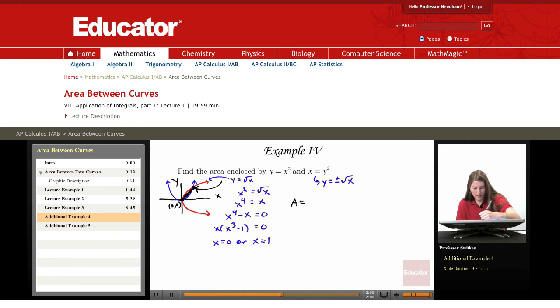So now we're ready to set up our integral and it will be an integral from zero to one. The upper curve is the red curve which is x equals y squared, which we rewrote as y equals plus or minus radical x. We realized we're on the upper branch of the red curve which is y equals positive radical x since we're at positive y values. So the upper curve again is positive radical x.